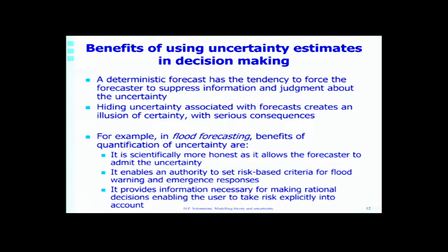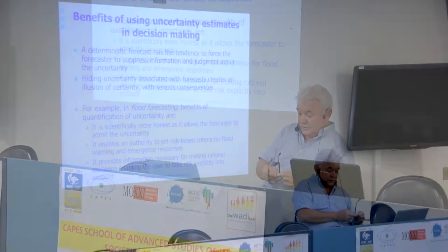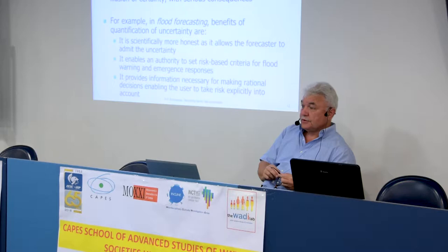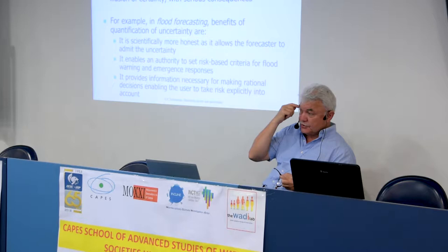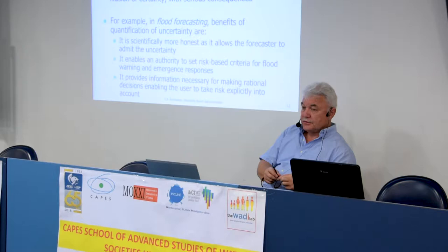A deterministic forecast has the tendency to force the forecaster to suppress information and judgment about uncertainty, because it's easy to hide behind deterministic forecasts. But if you publish one number only for the public or authorities, you hide information — it's not the correct answer and it will never be that exact number. The whole decision-making process should be changed, but it's not yet changed. Most models give you deterministic answers, and our tools do not yet give you uncertainty forecasts.